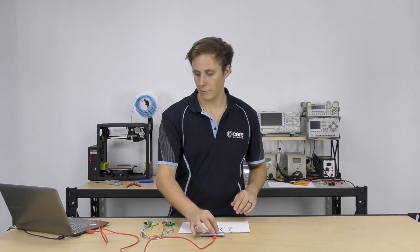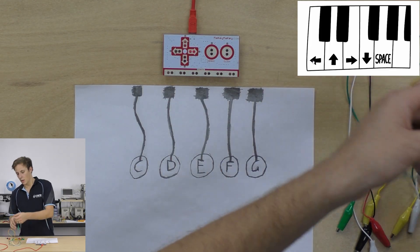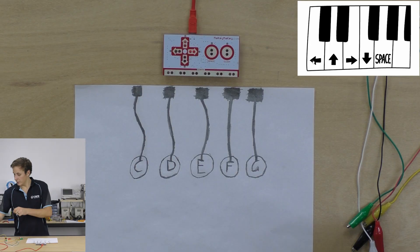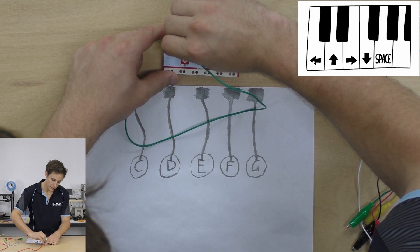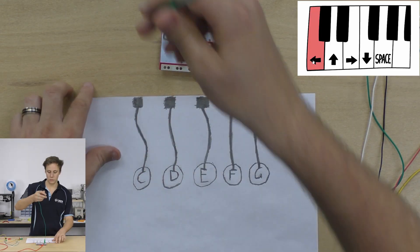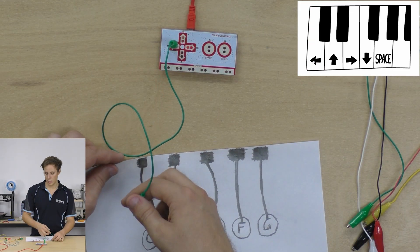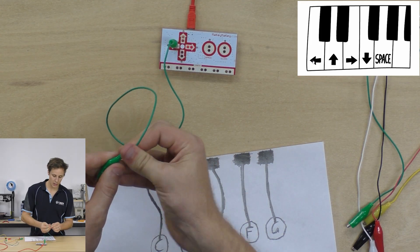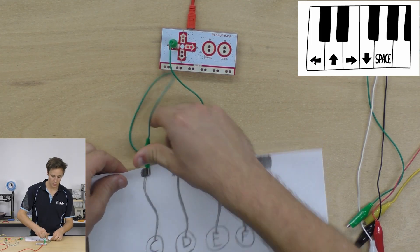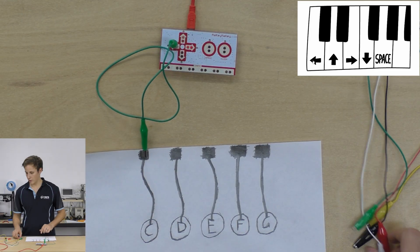I'm triggering the piano already from the Makey Makey. So go ahead and I can see that the C note on our piano is connected to the left pad. So connect that up. I'm accidentally making a connection. Alrighty, there we go.